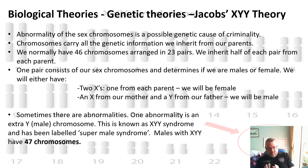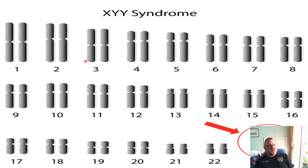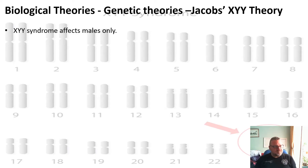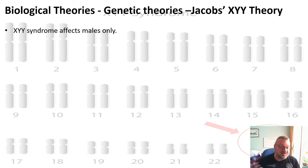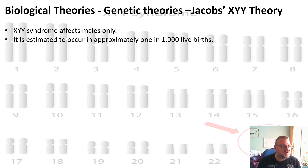Males with XYY have 47 chromosomes. You can see in the chromosome diagram that number 23 has one X and two Ys. XYY syndrome is only going to affect males because they're the only ones with the Y chromosome — females can't have a Y chromosome, so the syndrome can only affect males. It's estimated to occur in about one in a thousand live births, so one in a thousand males might be XYY.